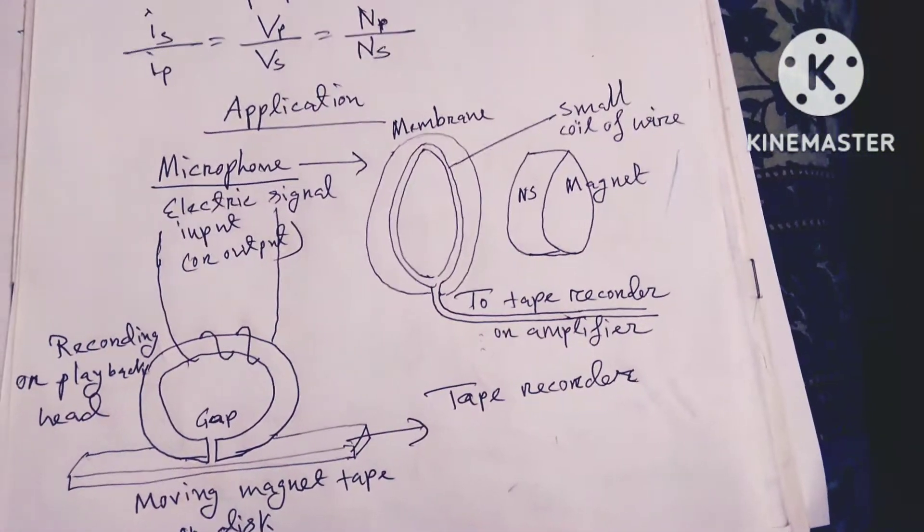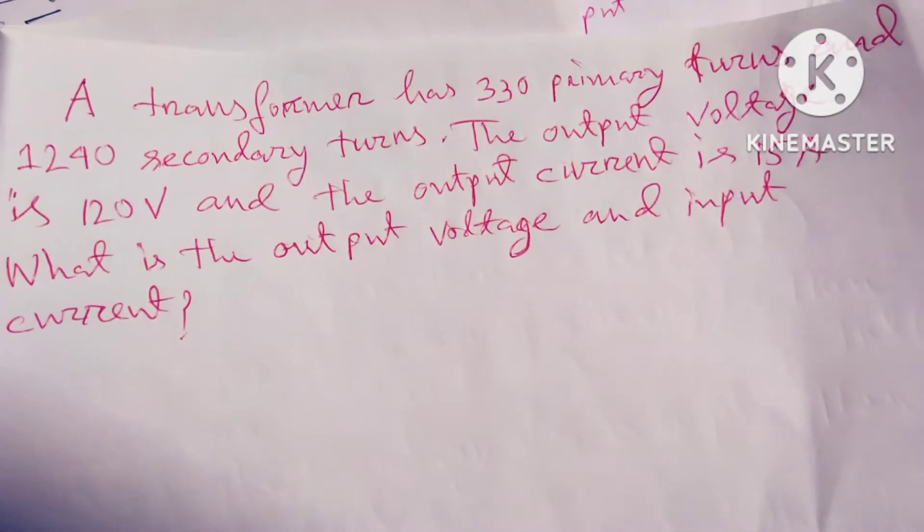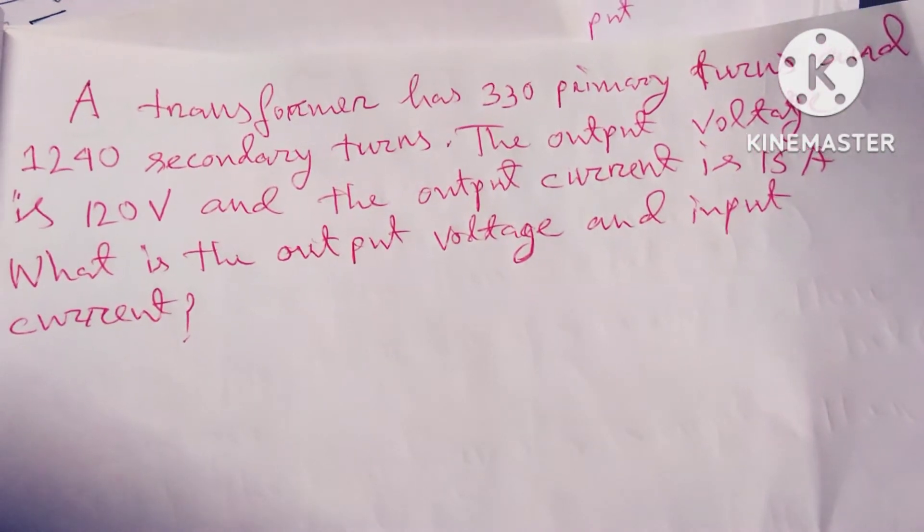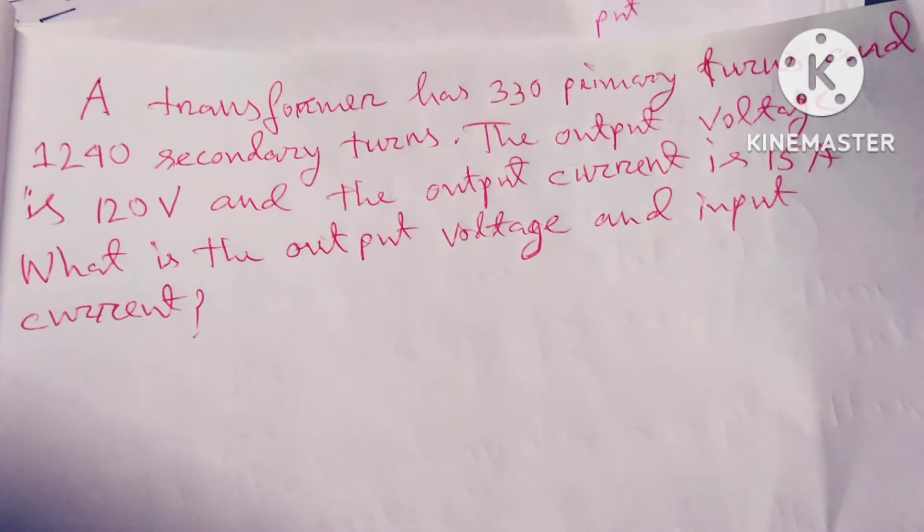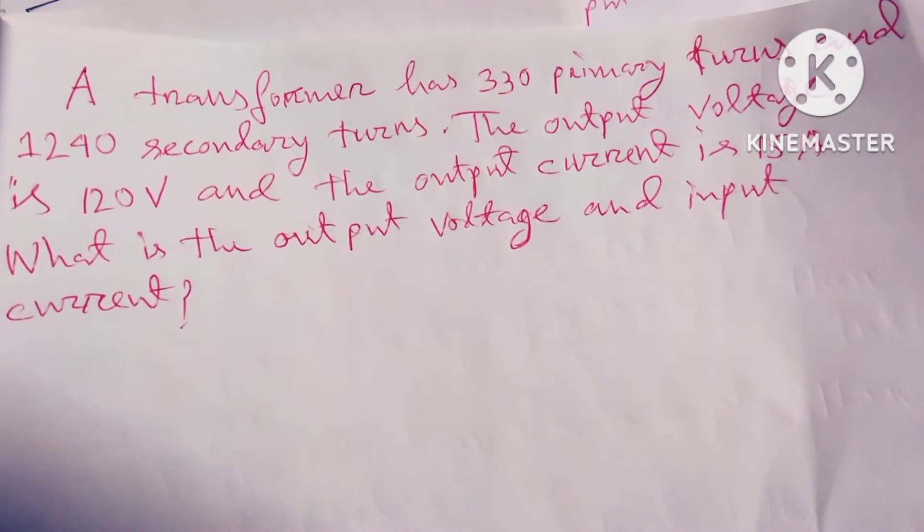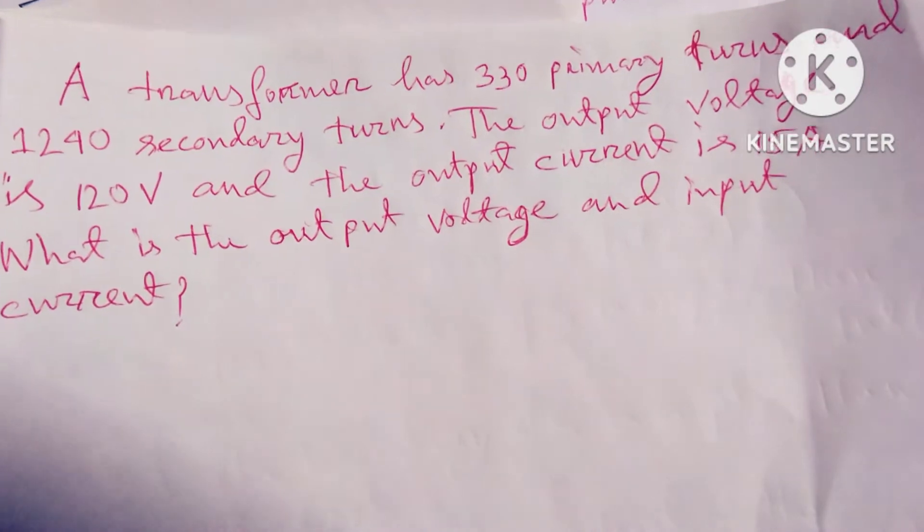Now I will solve a problem based on transformer. A transformer has 330 primary turns and 1240 secondary turns. The output voltage is 120 volts and the output current is 15 amperes. What is the output voltage and input current?